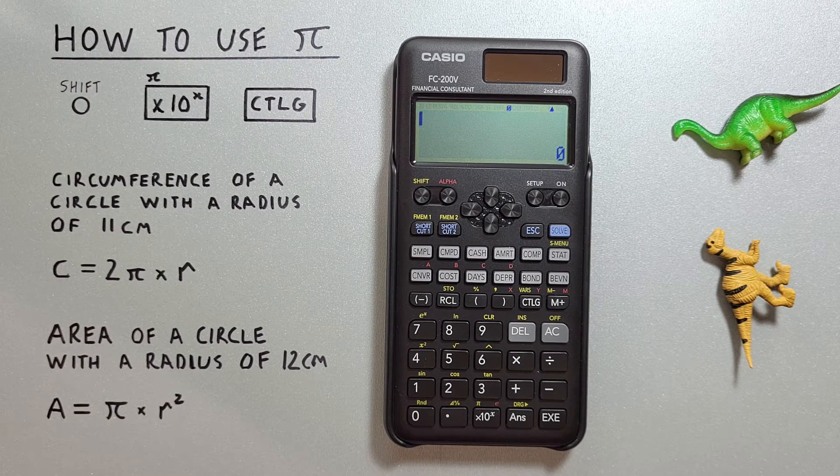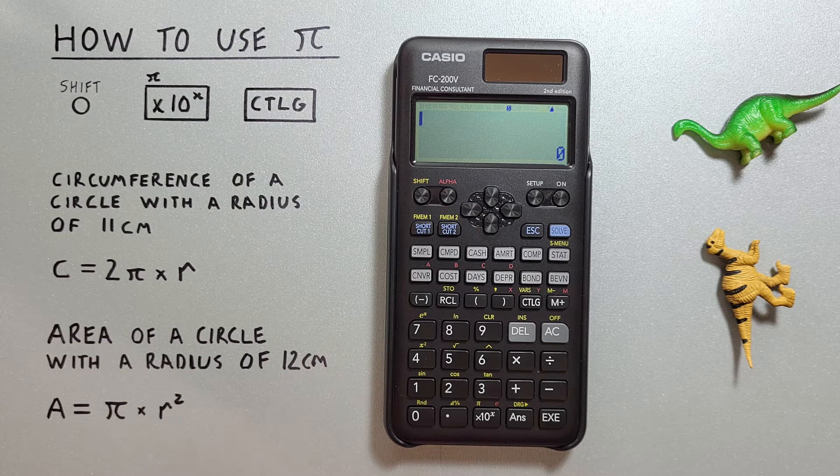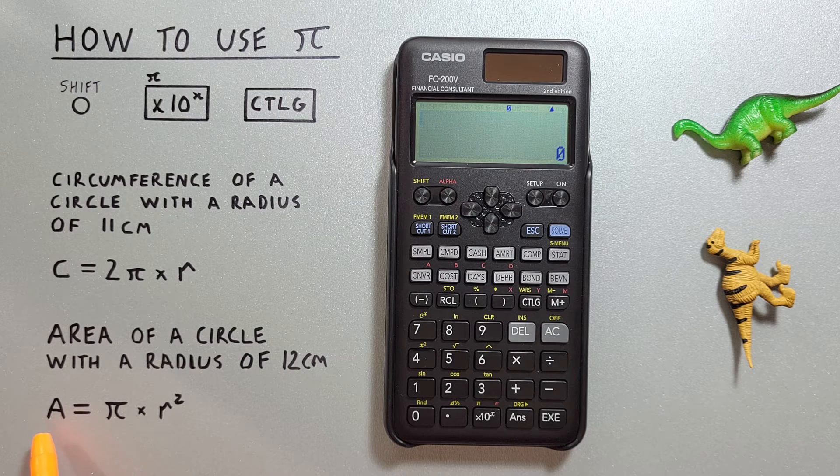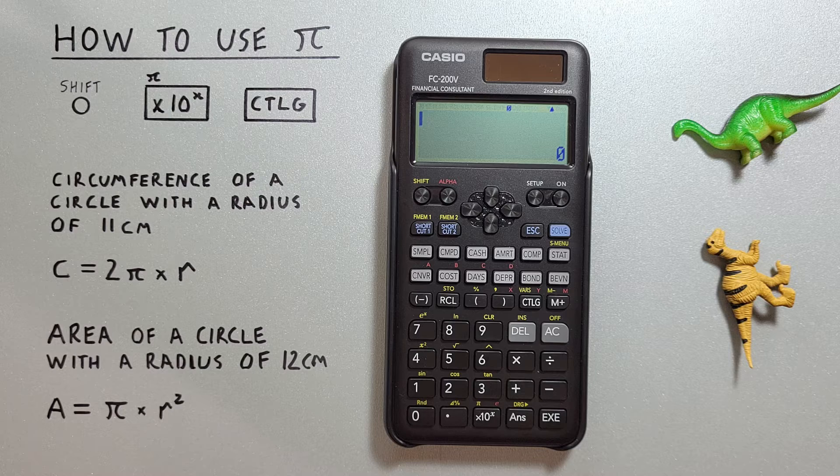Another example of using Pi would be to find the area of a circle with the radius of 12 centimeters. To do this, we can use the formula A = π × r².